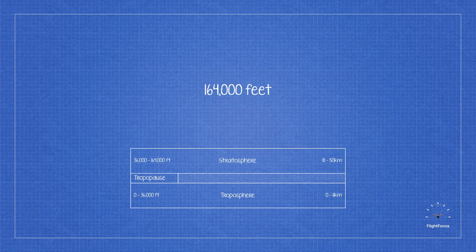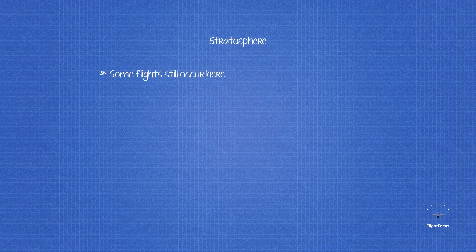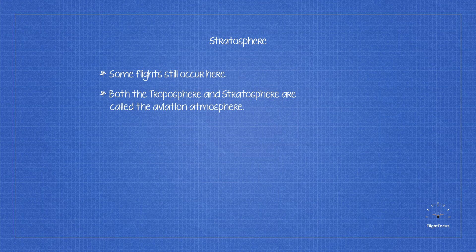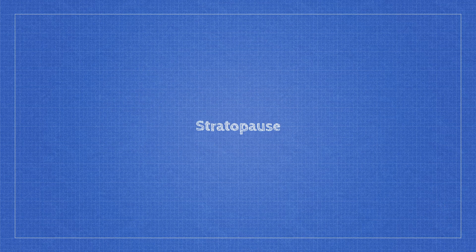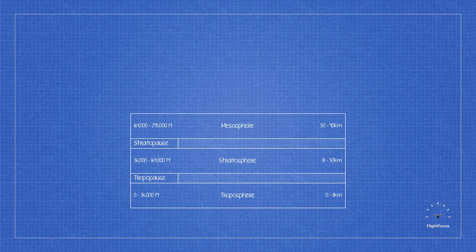The stratosphere extends from the tropopause to approximately 164,000 feet above the surface of the Earth. Some flying still occurs in the lower parts of the stratosphere, combining the troposphere and lower parts of the stratosphere, which is often referred to as the aviation atmosphere. The stratosphere is generally stable, with a consistent temperature that reaches about 0 degrees Celsius at its upper boundary. This temperature change is a result of ozone absorbing ultraviolet radiation and then emitting it as infrared heat.